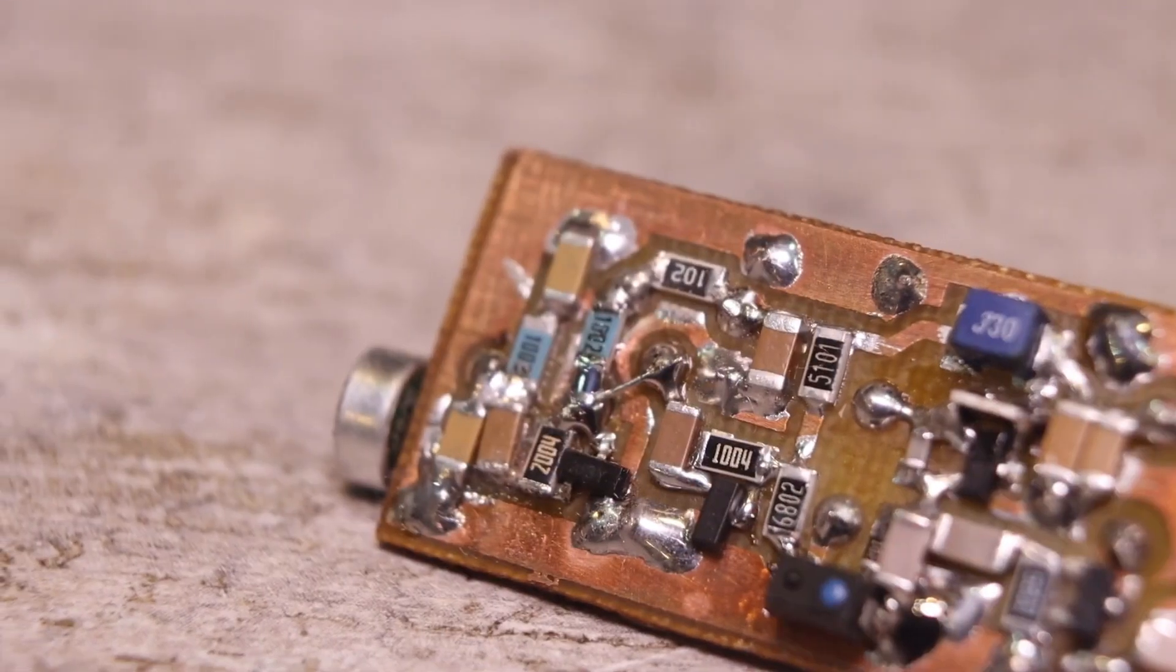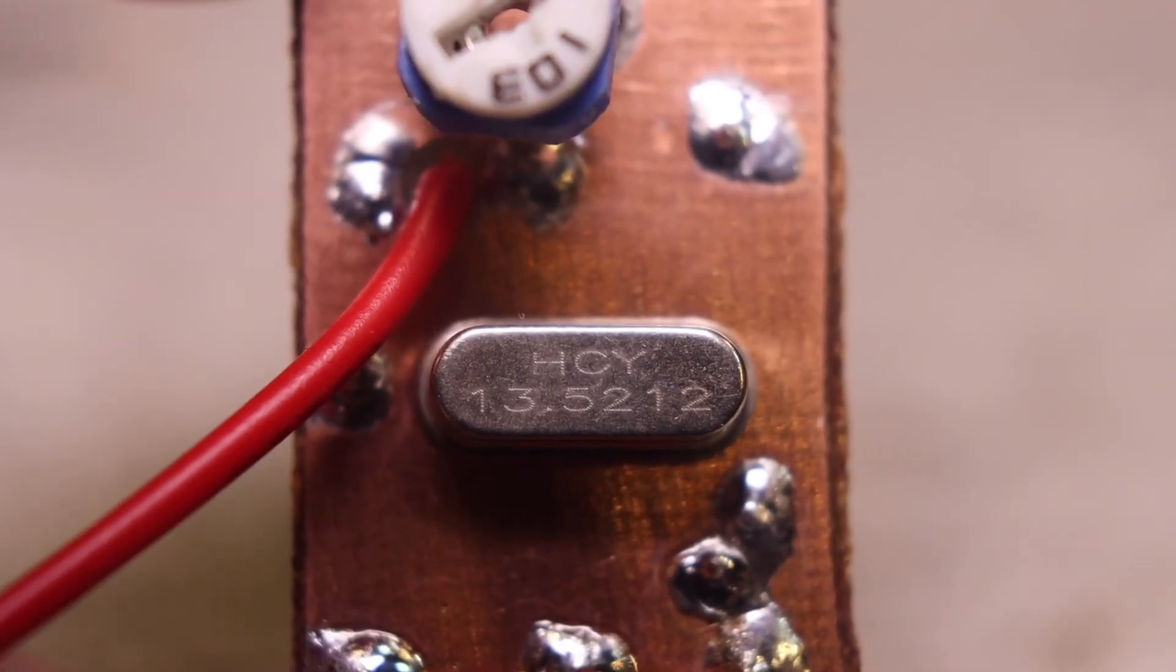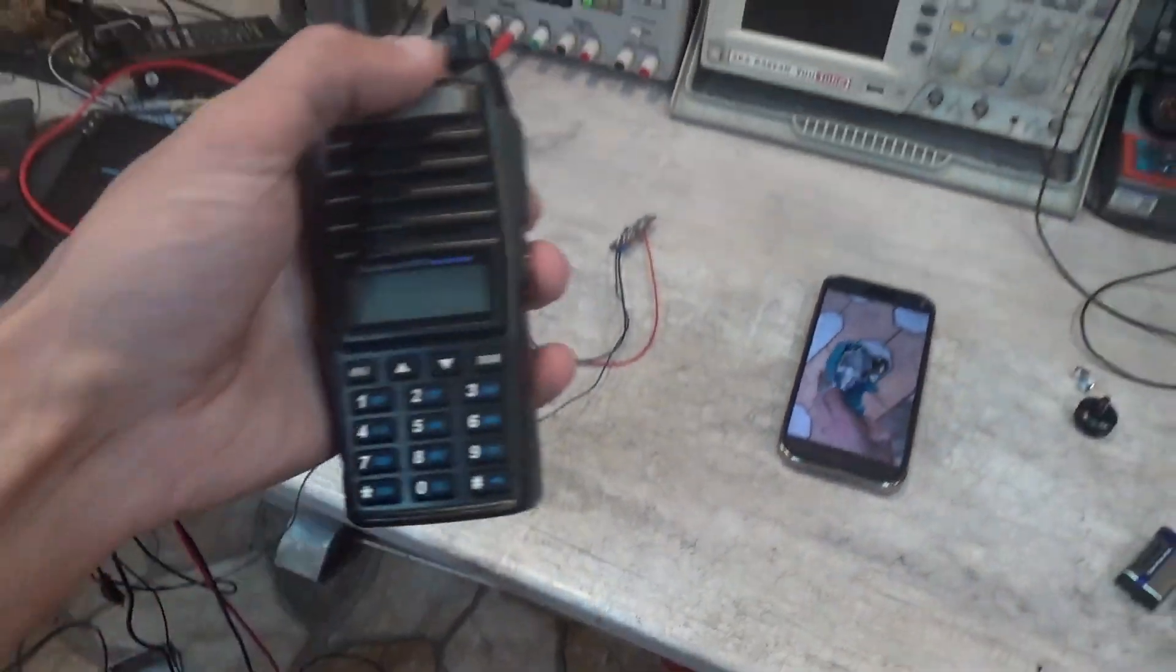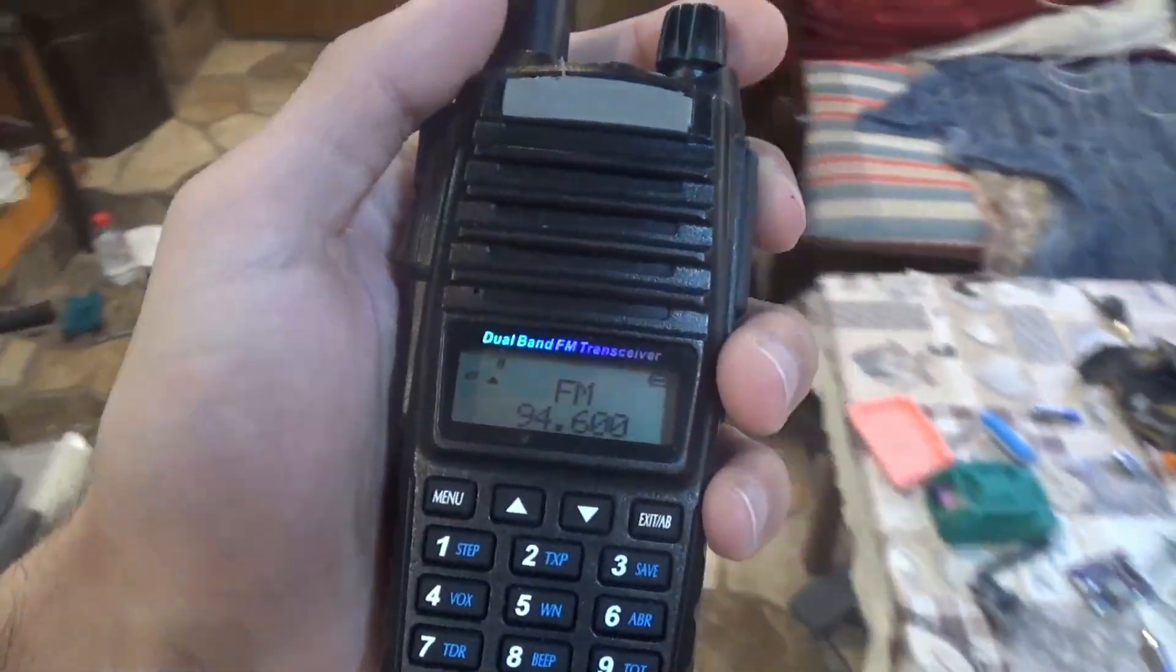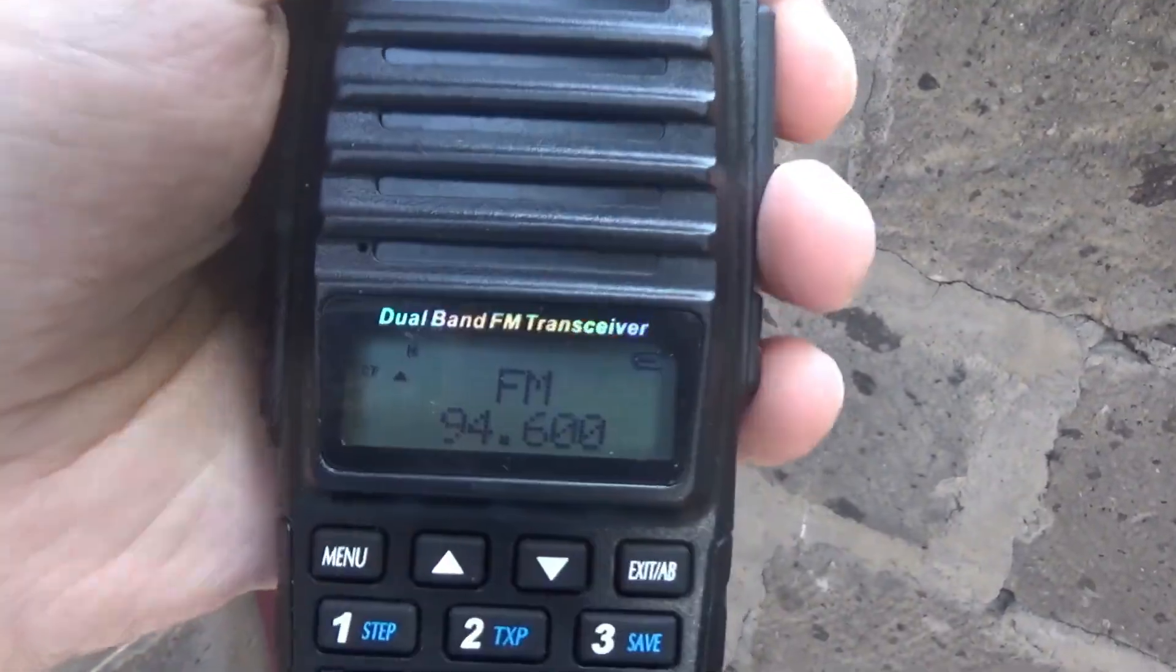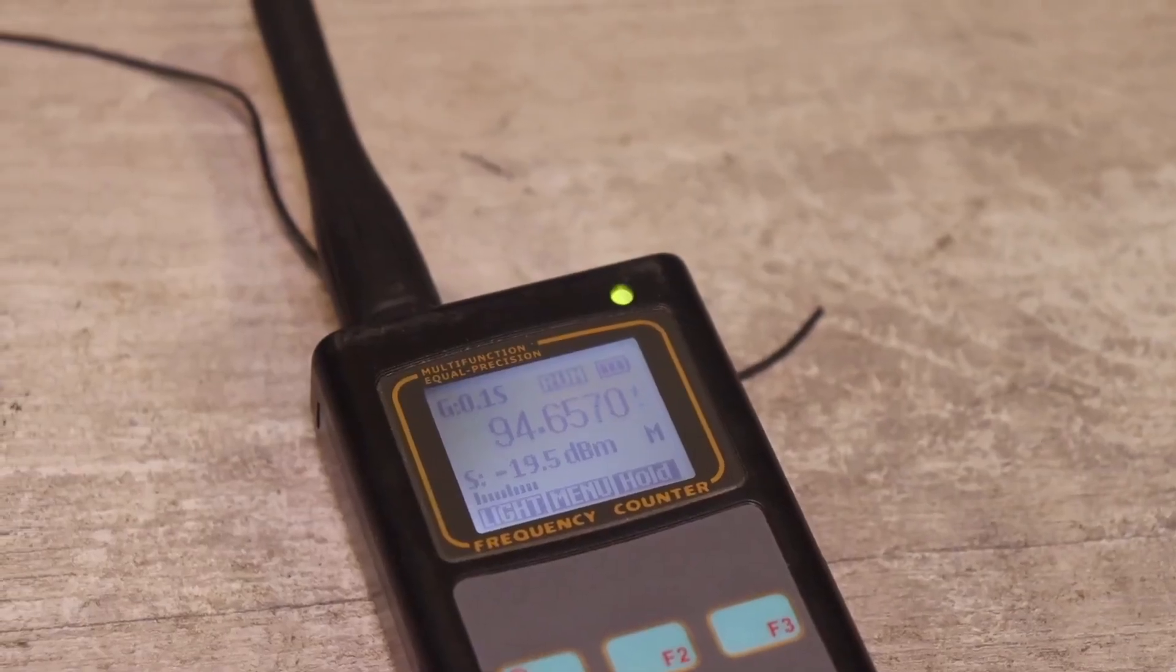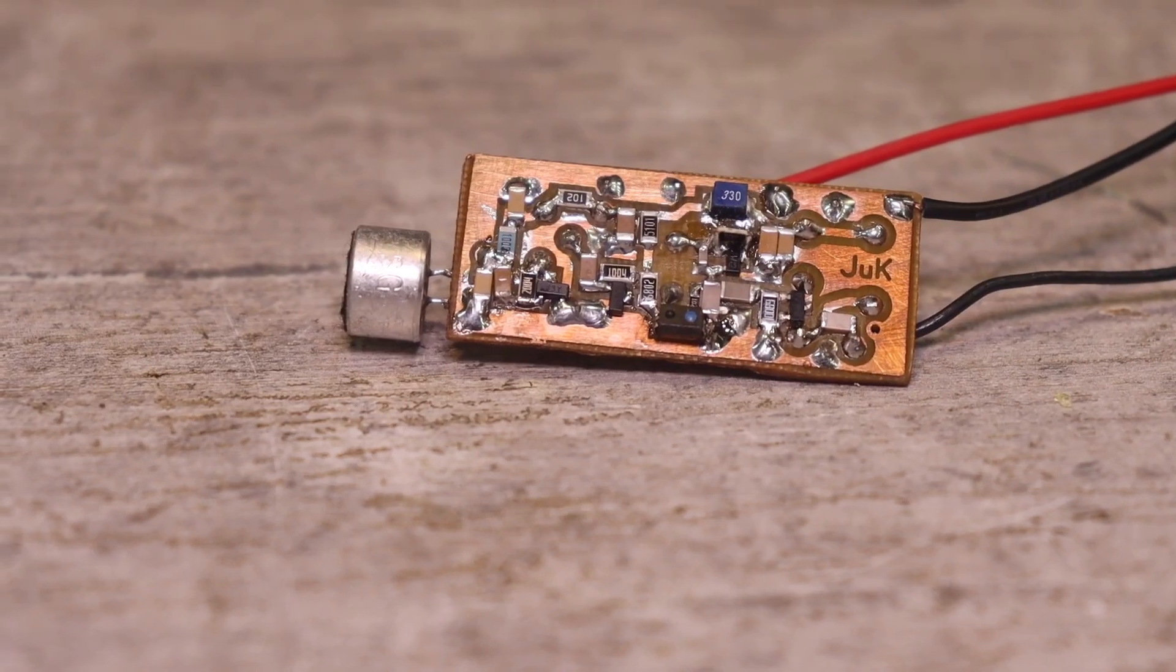I really liked the work. No parasitic self-excitation. The frequency is stable even with a strong decrease of supply voltage, nothing floats, doesn't squeak or whistle. There is no frequency drift even if you touch the transmitter or take it in your hands, everything works stably. The consumption from a 9V source in my case was about 10mA.